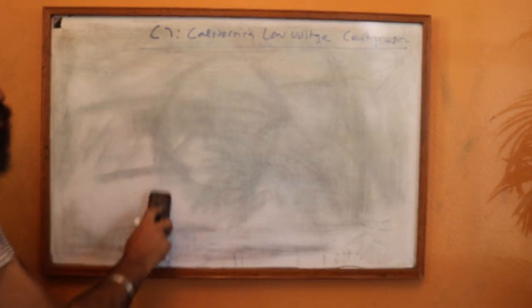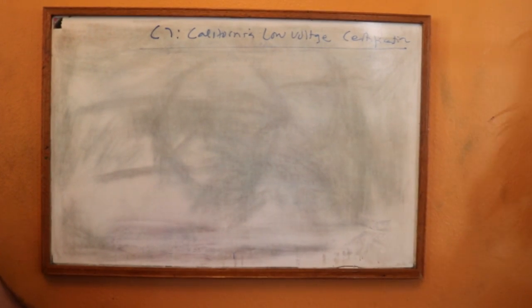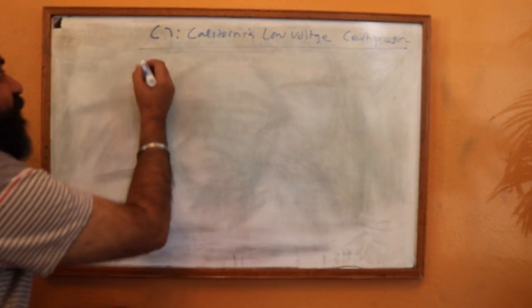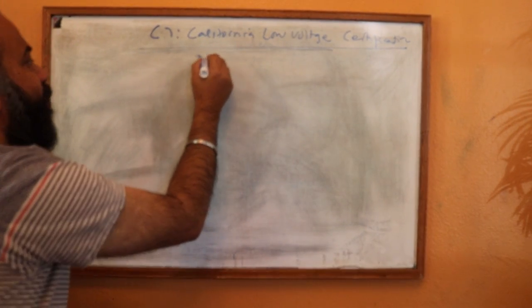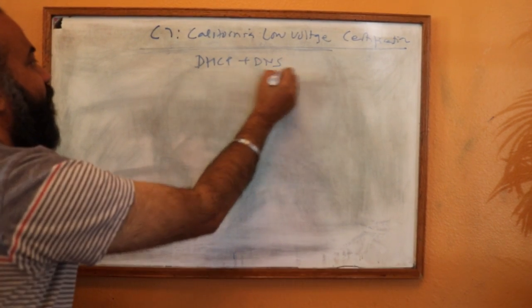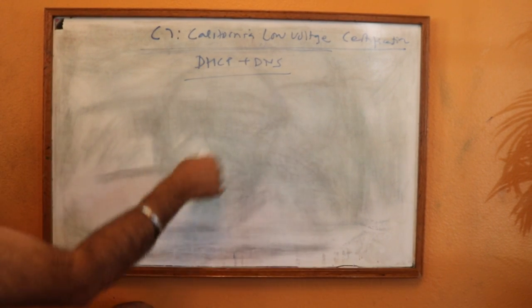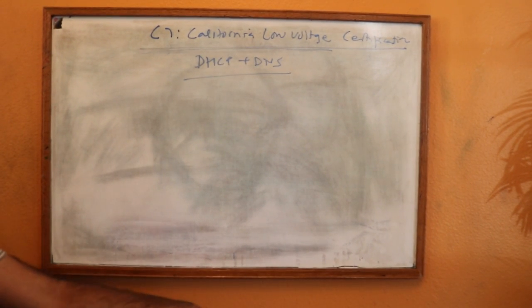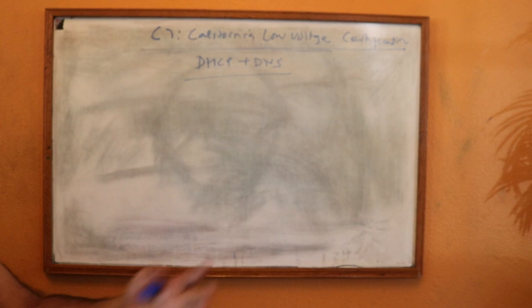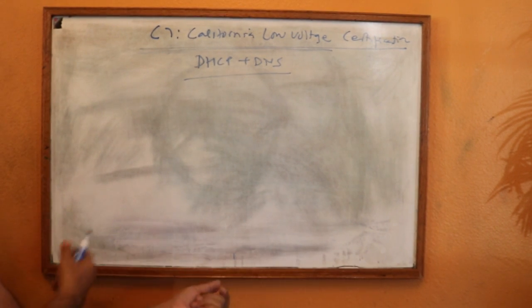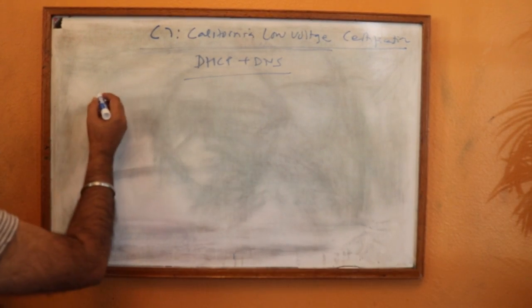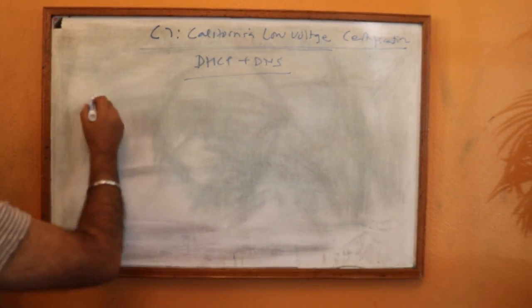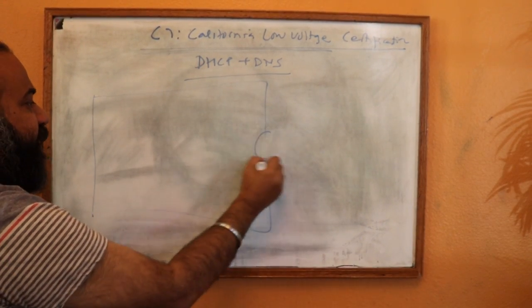Let's talk about two services now. I think we have covered most of the topics here. Let's quickly cover what DHCP and DNS services are, because these are actually used in networks. There are two ways of assigning IP addresses in a network segment — we have a big network segment and a router.